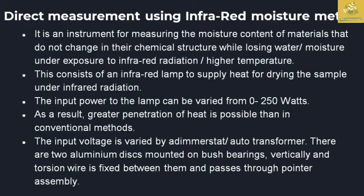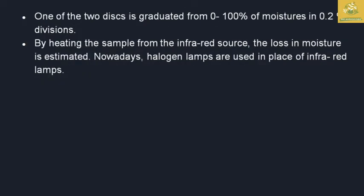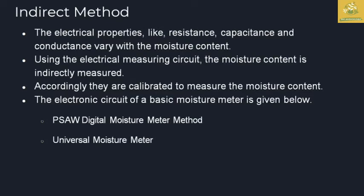Two aluminum disc counters on brush bearings are placed vertically and a torsion wire is fixed between them, passing through the pointer assembly. One of the two discs is graduated from 0 to 100% moisture in 0.2% divisions. By heating the sample with infrared, the loss in moisture is estimated. Nowadays, halogen lamps are used in place of infrared trace lamps, which is an improvement.